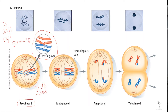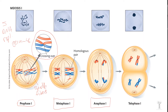Prophase I looks similar to mitosis, except that in metaphase I the homologous pairs line up together — sister chromatids stay stuck together. In mitosis, chromosomes line up individually and sister chromatids separate, but here we are separating the homologous chromosomes. In anaphase I, homologous chromosomes separate while sister chromatids remain joined. Then telophase I occurs with a cleavage furrow and cytokinesis, similar to mitosis.